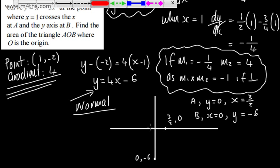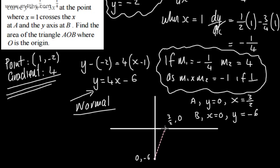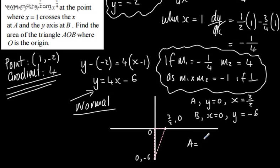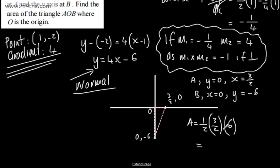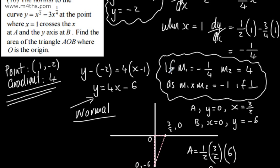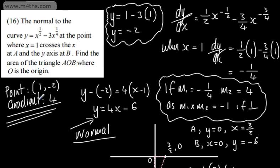The area of the right-angle triangle AOB is 1/2 times base times height. The base is 3/2 and the height is 6 — we don't write negative as it's a length. That gives us 9/2 square units. So that's the area of the triangle. All I've done is found a point, a gradient, substituted into the equation of a straight line, and considered where it crosses the coordinate axes.